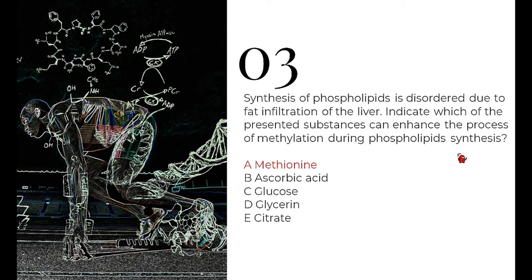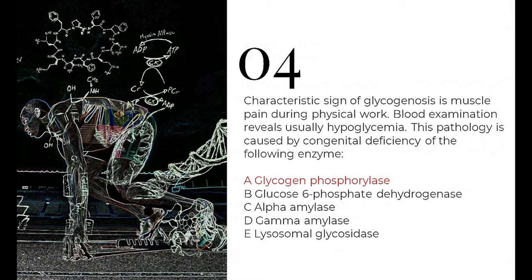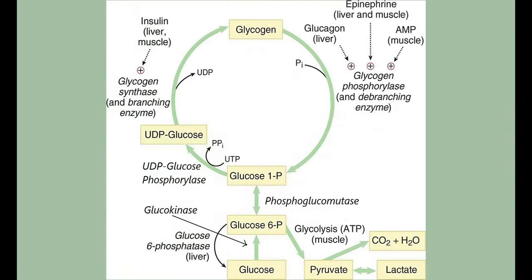The next question is about glycogenosis. Characteristic signs include muscle pain during physical work and hypoglycemia on blood examination. They ask about a congenital enzyme deficiency. To understand, we analyze glycogen and glucose metabolism. Glucose is the usable form and glycogen is the branched storage form of energy. Glycogenesis is conversion of glucose to glycogen; glycogenolysis is breakdown of glycogen back to glucose.